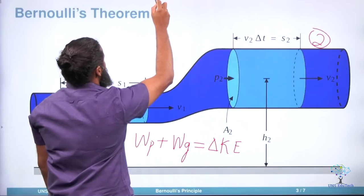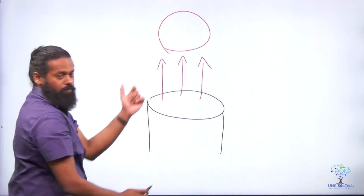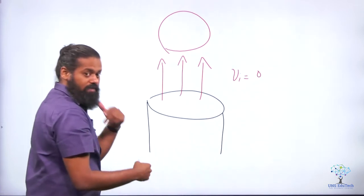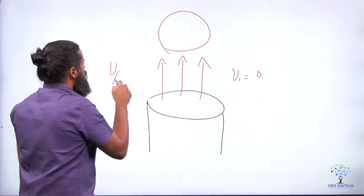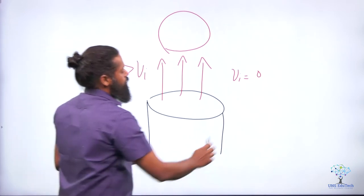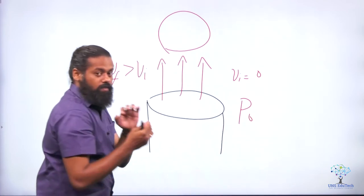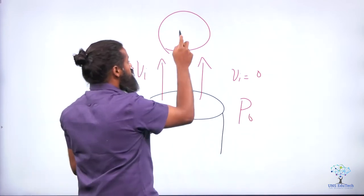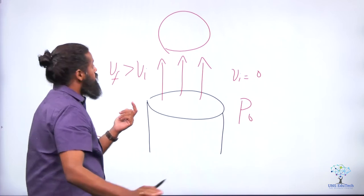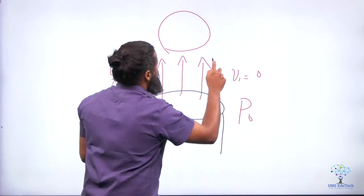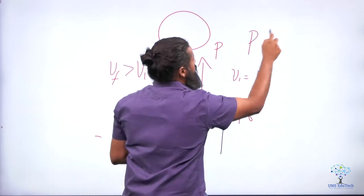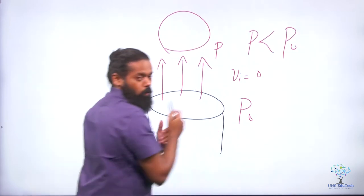Going back to the demonstration: here the air jet is coming out. Initially the velocity was zero; when the jet is on, velocity increases. The ambient pressure was atmospheric pressure P0. When velocity increases inside the jet stream, Bernoulli's principle tells us pressure should go down — so P will be less than P0.